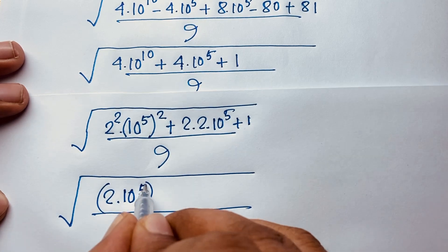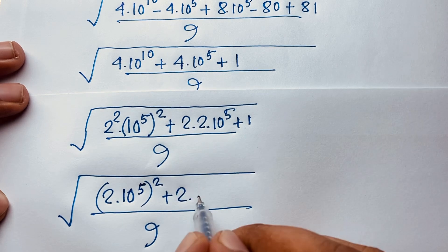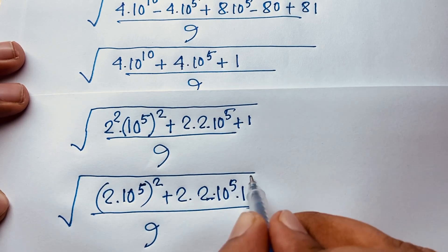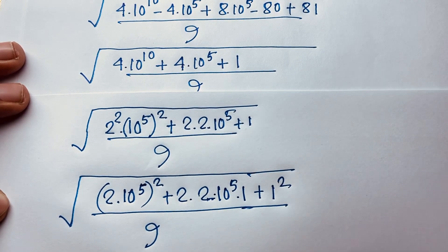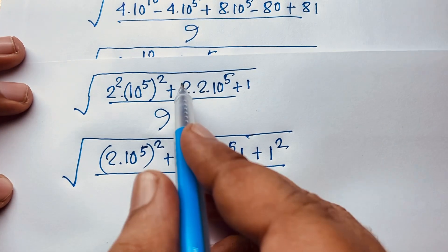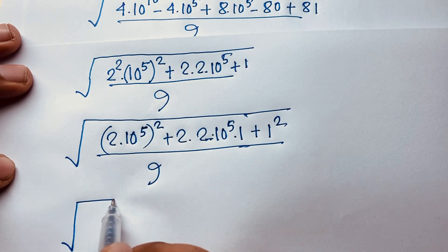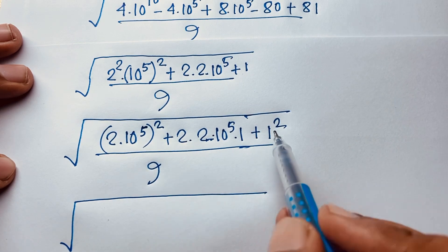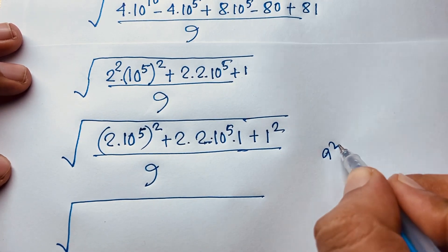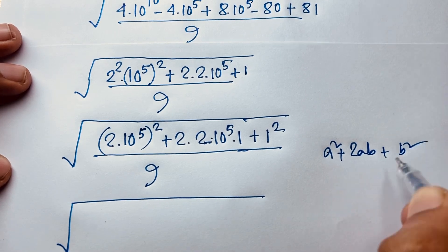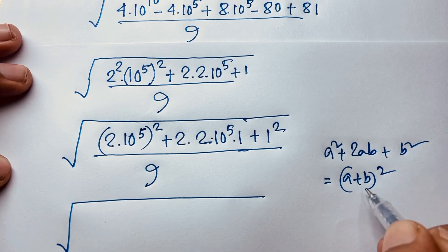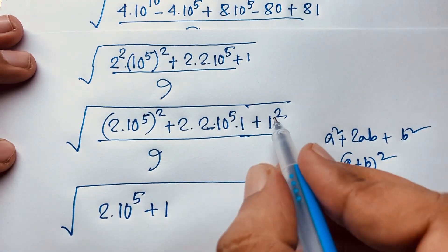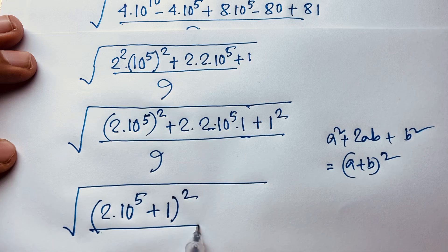...whole to the power 2, plus 2 times 2 times 10 to the power 5, times 1, plus 1 squared. Now you can easily see these, these, and these are the same. So at this point if you think this is 'a' and this is 'b', so a squared plus 2ab plus b squared — you know that a squared plus 2ab plus b squared equals (a plus b) squared.